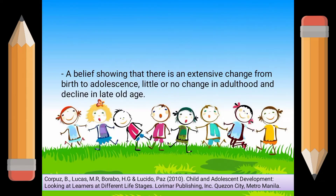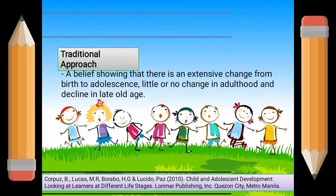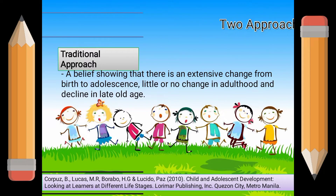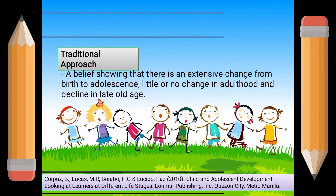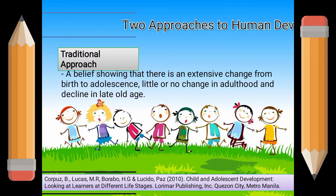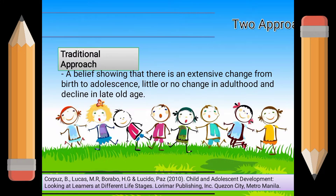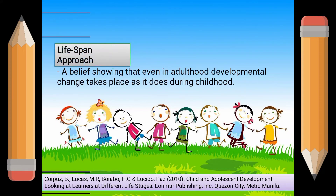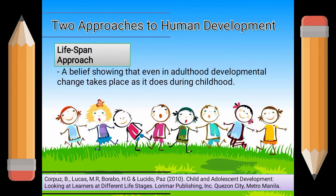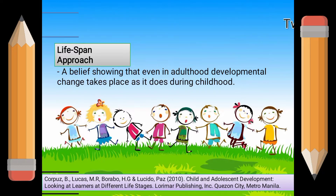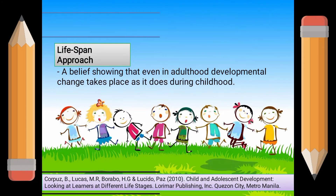There are two approaches to human development. First is the traditional approach. It is a belief showing that there is extensive change from birth to adolescence, little or no change in adulthood, and decline in late old age. Next is the life span approach. It is a belief showing that even in adulthood, developmental change takes place as it does during childhood.